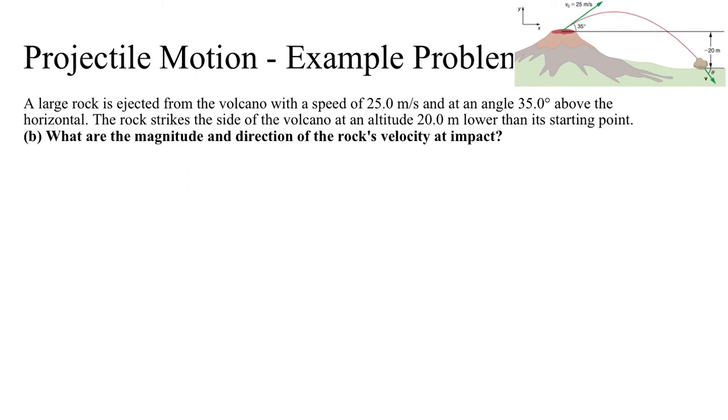Now the last part of this question asks for the magnitude and direction of the rock's velocity at impact, which might sound like a strange question. Let's draw the velocity vector at the very end of the rock's trajectory. It would look something like this. So this is my velocity final at the very end.